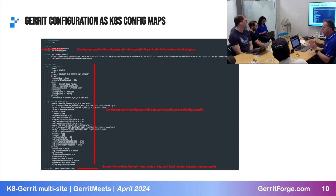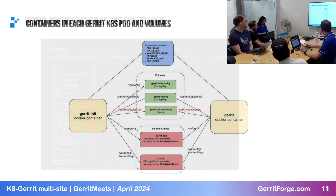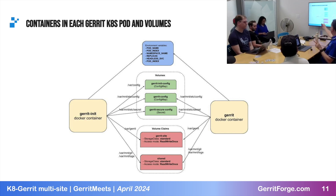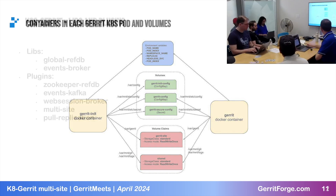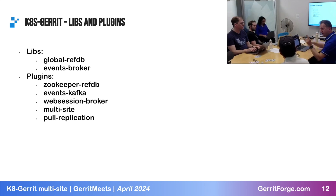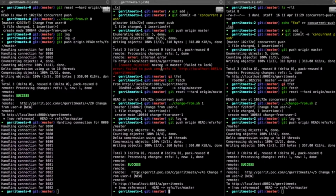Each primary pod actually has two Docker containers: one is the Gerrit runtime container using the global LibFTB events broker libraries, and the other is a Gerrit init container that can initialize the system. ZooKeeper, Kafka, and the web session broker are also used. If you log into one primary, because of session broadcasting, you'll be logged in on all of them at the same time.